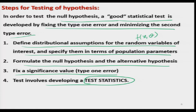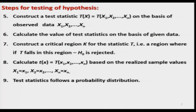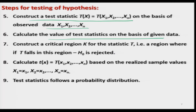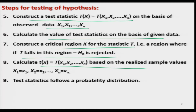Construct a critical region for the test statistic t — the region where if t falls, H0 is rejected. Find the value of the test statistic from the observed data and see whether it lies in the acceptance or rejection region. If the calculated t lies in the acceptance region it is smaller than the critical value and we accept H naught; if it lies in the critical region it is greater than the critical value and we reject H naught.